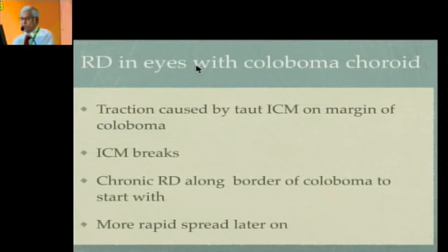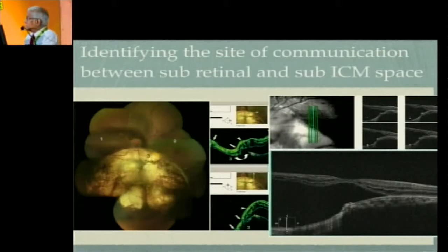You can identify the site of communication between the subretinal space and the sub-ICM space by OCT. As you can see in this section taken at one point, you can see the communication clearly. But in the same eye, another section taken just beyond that point shows no communication at all. This again demonstrates the sub-ICM space communicating with the subretinal space at a specific location.